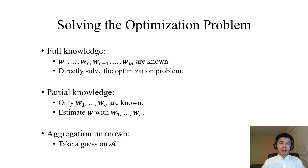As discussed, the attacker may have different knowledge. In the case that the attacker has full knowledge over the local models, the attacker can directly solve the optimization problem. In the case of partial knowledge where the attacker only knows the local models of the compromised workers, the attacker can estimate the global model. When the aggregation rule is unknown, the attacker can take a guess on A and perform corresponding attacks.